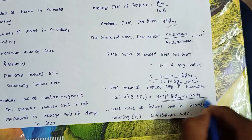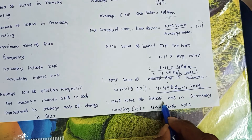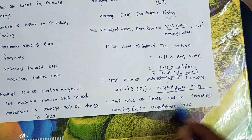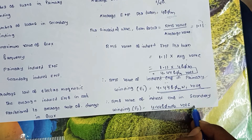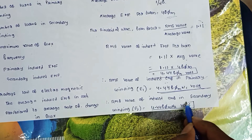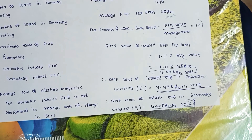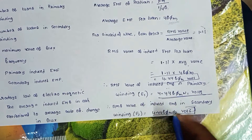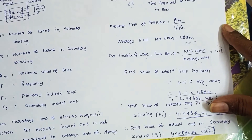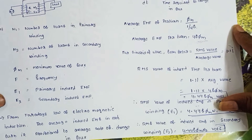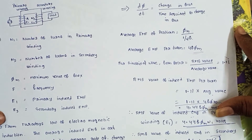This is the primary winding equation. The RMS value of the induced EMF in the secondary winding is E2 equals 4.44 × F × φM × N2. This is the EMF equation of the transformer — simple and easy.